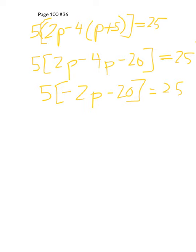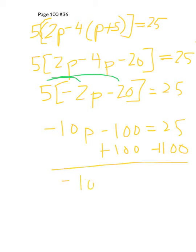Now we're ready to use the distributive property. Everything inside of the brackets gets multiplied by what is outside. So 5 times negative 2 is negative 10p. 5 times 20 is 100. Now we continue to solve. We can add 100 to both sides. We get negative 10p equals 125. Divide both sides by negative 10, p equals negative 12.5. And that's the solution.